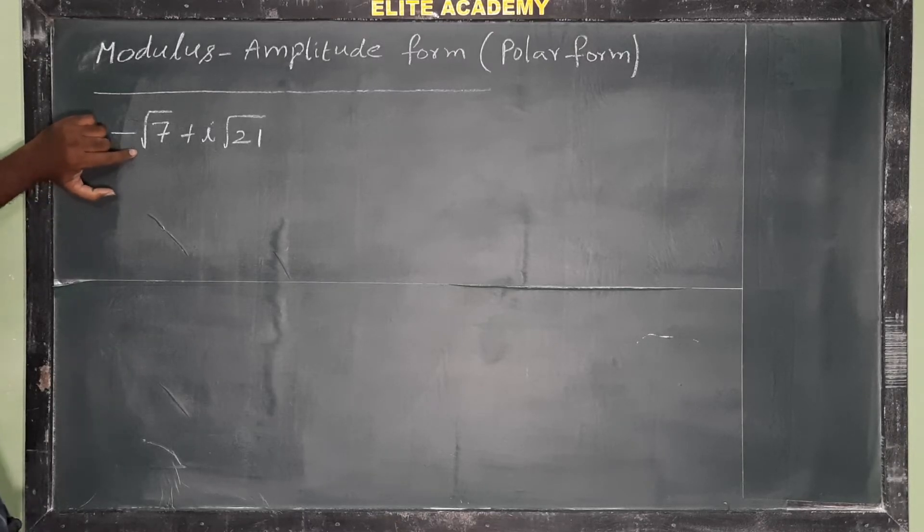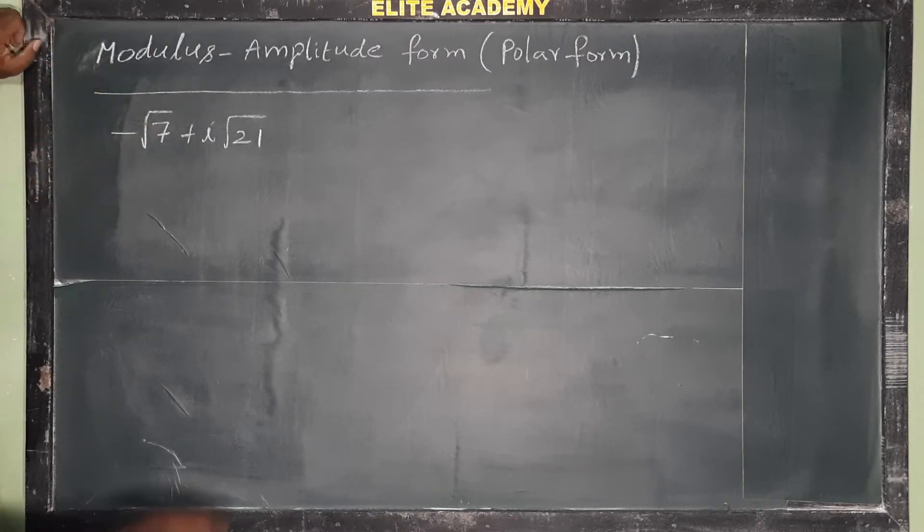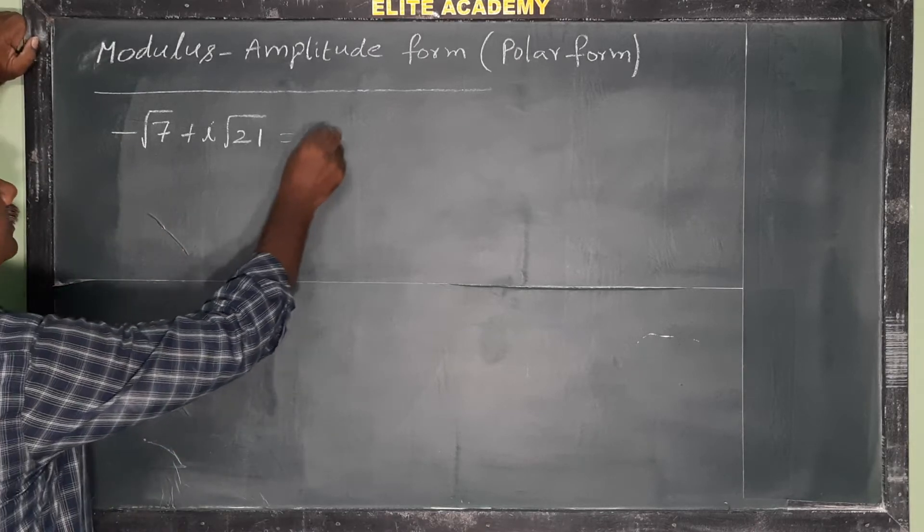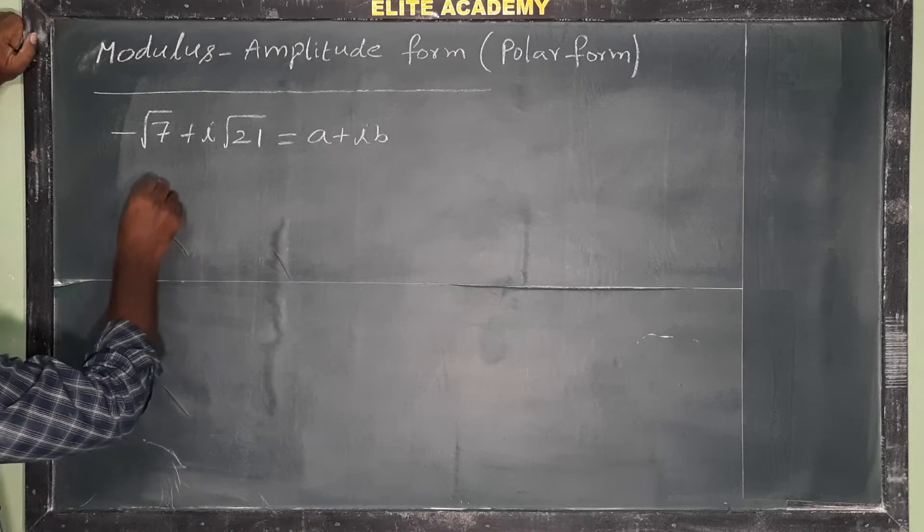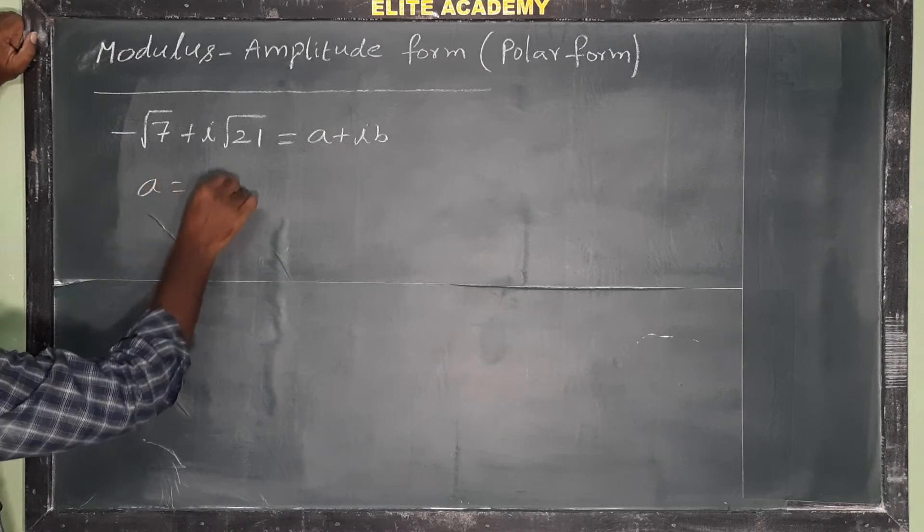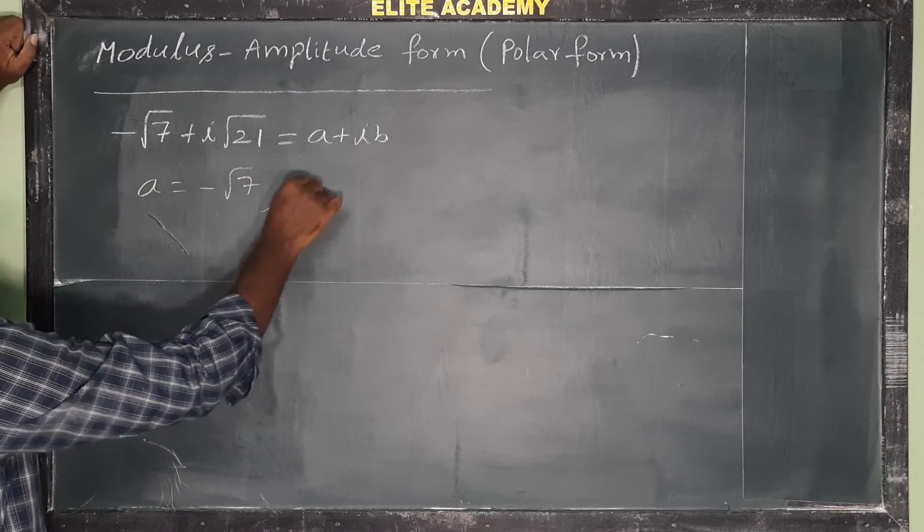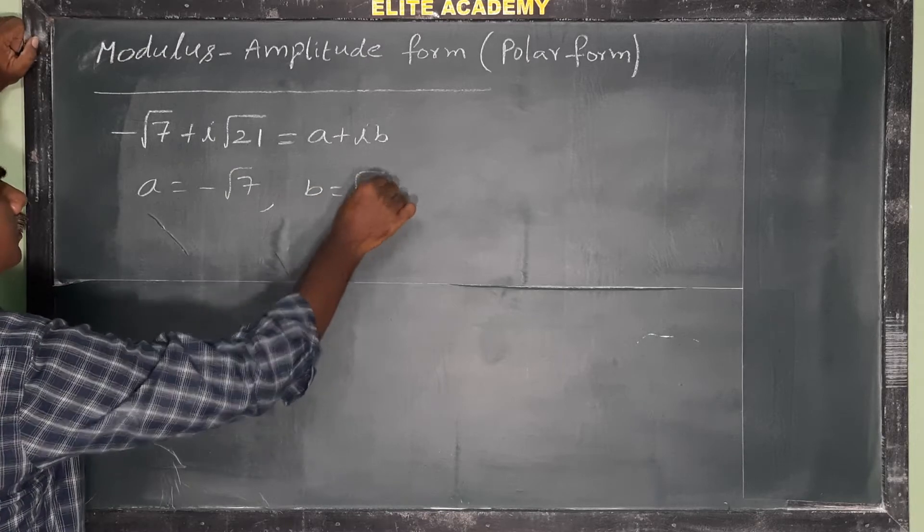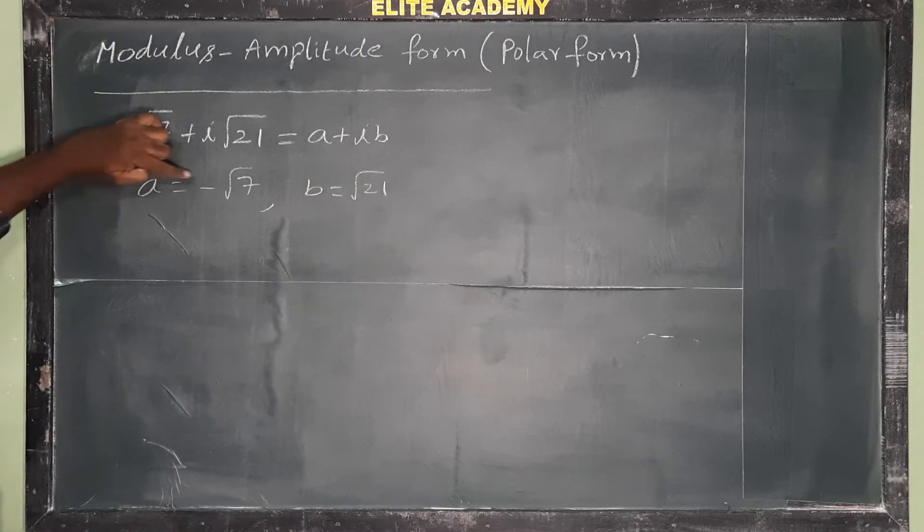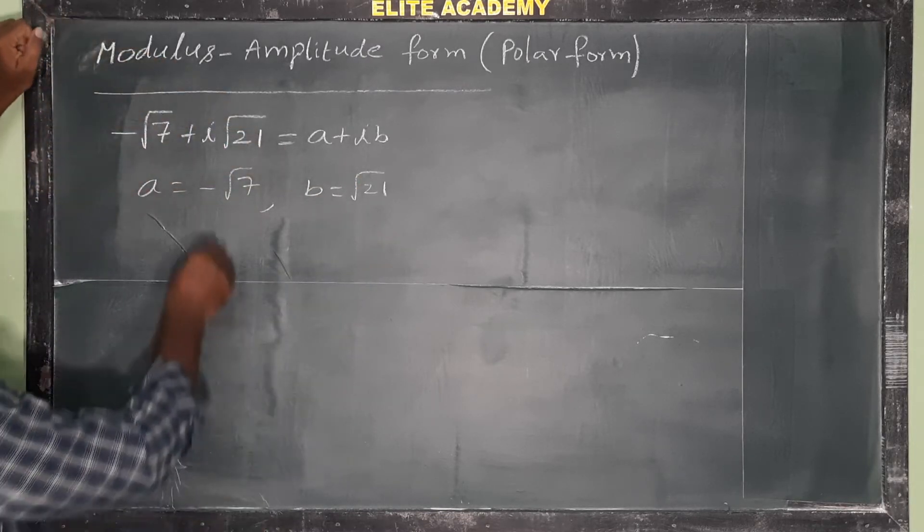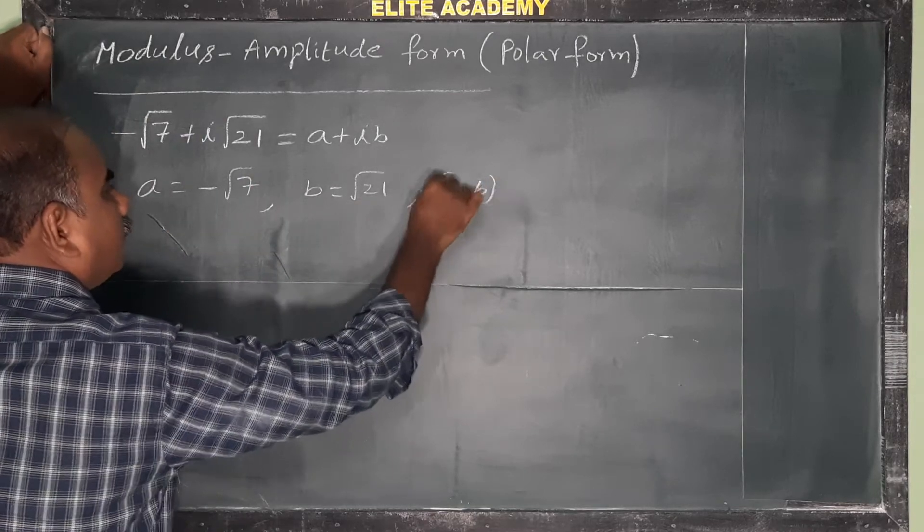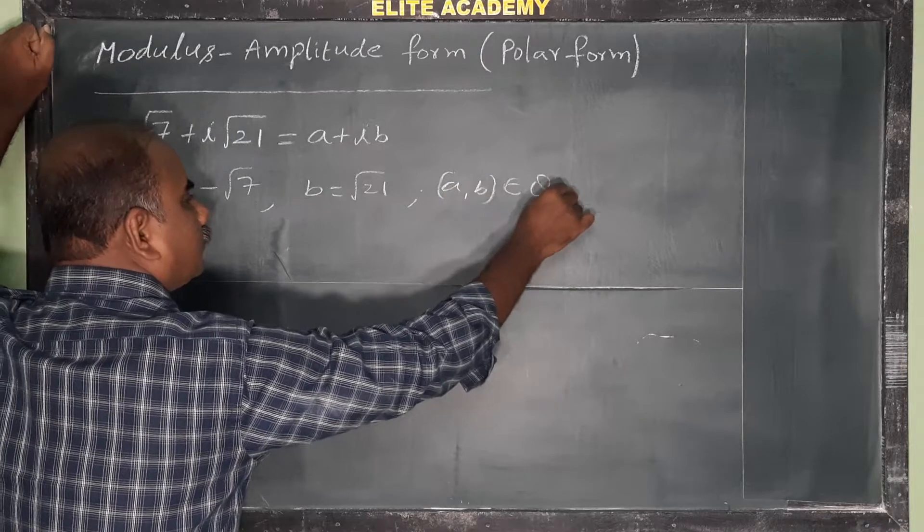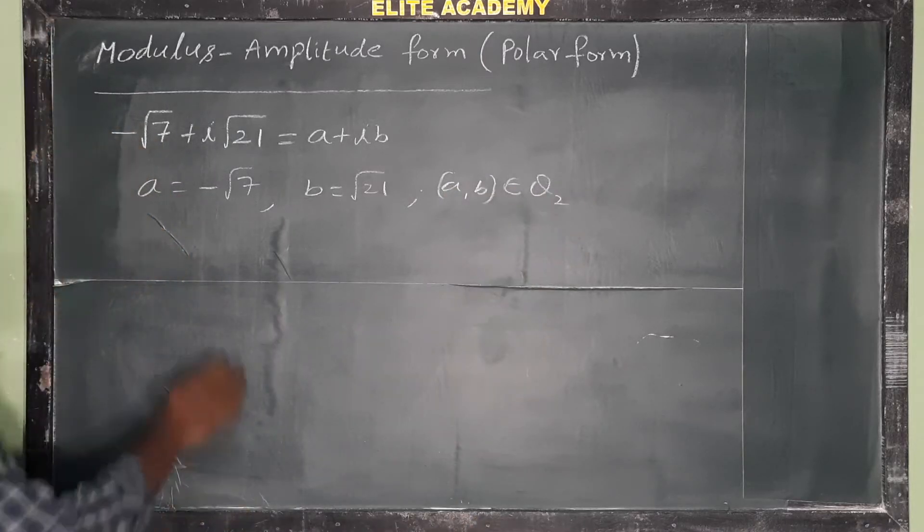Okay, next complex number: minus root 7 plus i root 21. So this is equal to a plus ib. Therefore, a is equal to minus root 7, b is equal to root 21. So a is less than 0, b is greater than 0. Therefore, a comma b belongs to Q2, the second quadrant.